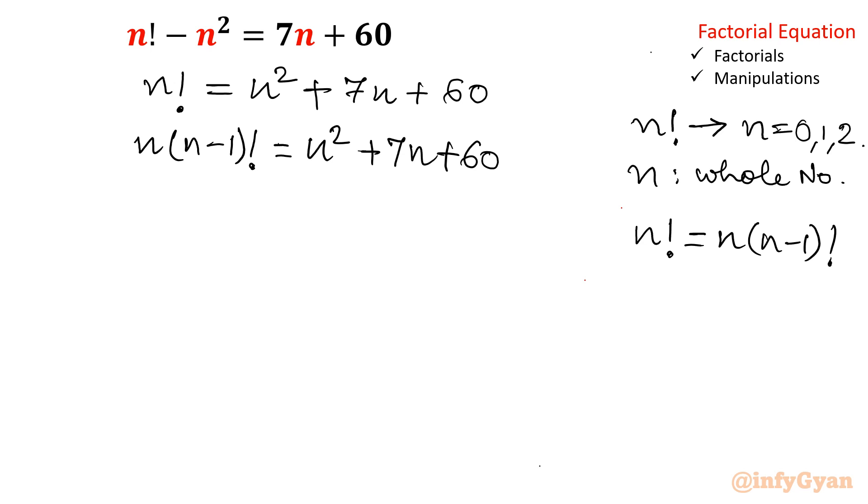So before that I have to check whether n equal to 0 is solution or not. So let me check at n equal to 0 what will happen to the equation. 0 factorial minus 0 square equal to 7 into 0 plus 60. 0 factorial is 1